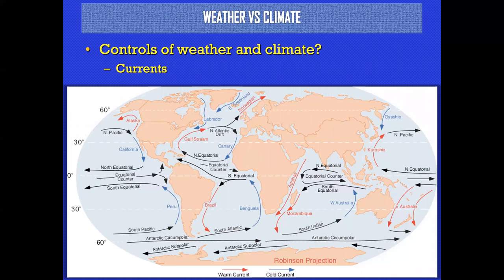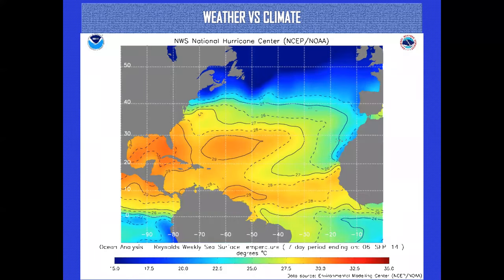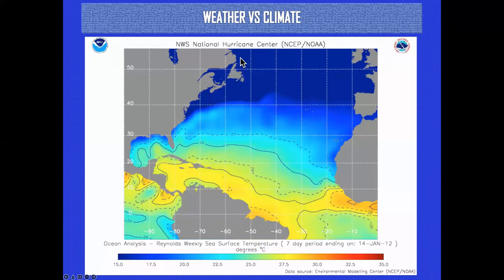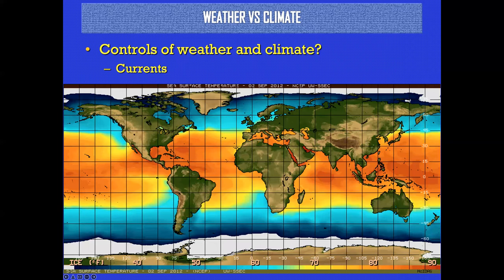Weather is here now; climate is long term. What controls weather and climate? Ocean currents, quite frankly. Here's the idea of water temperatures — this is water temperatures in January and September. Things heat up and change over time; there's a seasonal shift. Notice here it's cold the entire time and you really have to get to a lower latitude before you start getting any warming. This is why hurricane season happens roughly between June and October — it takes a while for the ocean to heat up.